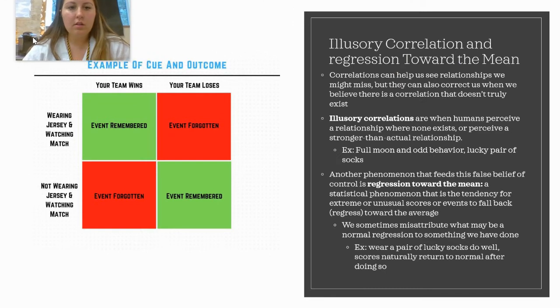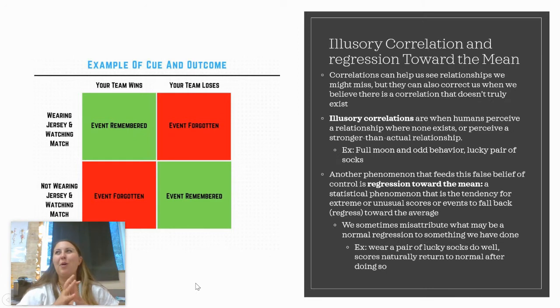Now, there are these things that humans like to do where we create what we call illusory correlations. Sometimes humans can see or believe that two things are related when really they are not. This is what we call an illusory correlation—when humans perceive a relationship where none exists or perceive as stronger than actual relationship. Some examples of this are the full moon and odd behavior. People think that when the full moon comes out, odd behavior occurs. That's basically because if you already have that belief, it's going to be a lot easier for you to remember when that belief is confirmed versus when that belief is not confirmed. Your brain just will not remember every time there was a full moon and nothing weird happened, and the opposite will over-remember every time there was a full moon and things that were weird did happen.